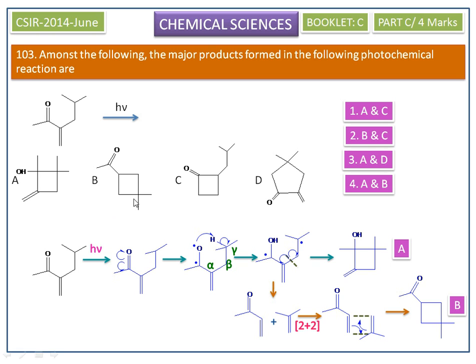The major products formed in this photochemical reaction are A and B. So the correct option is the fourth option.